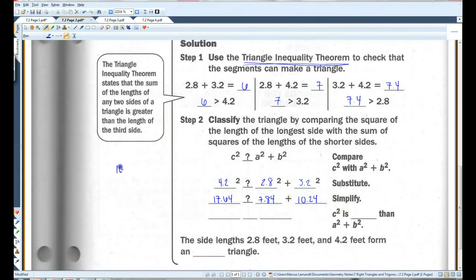So if I add these two together, I've got 17.64 and I've got 18.08. This is bigger. So C squared is less than A squared plus B squared. The sides form an acute triangle. Let's go on to page 3.